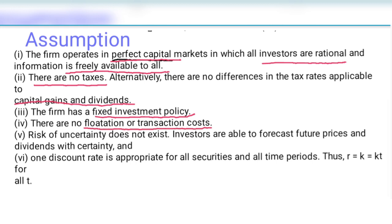There are no floatation or transaction costs, means the company is not required to pay any underwriter commission, transaction or merchant bank commission, or any cost for buying or selling securities. If risk of uncertainty does not exist, means there is no uncertainty.